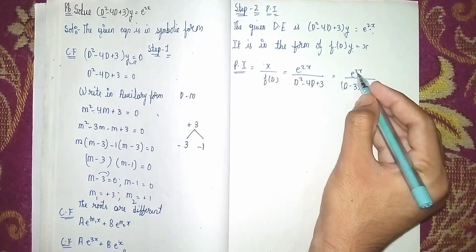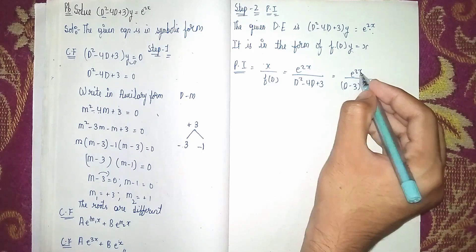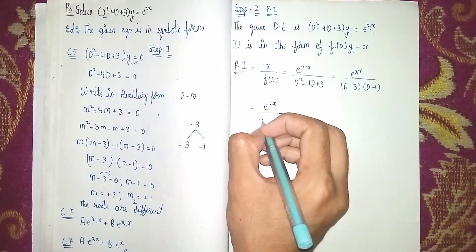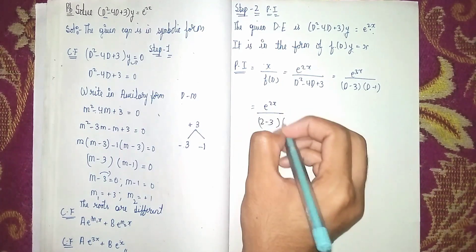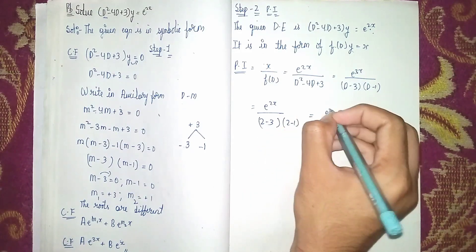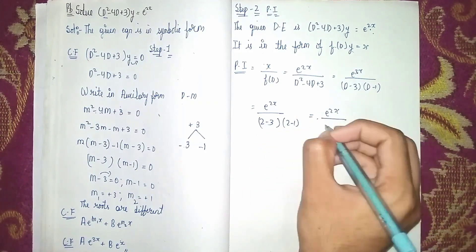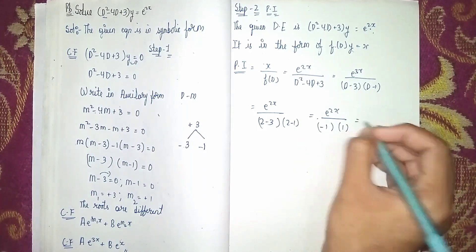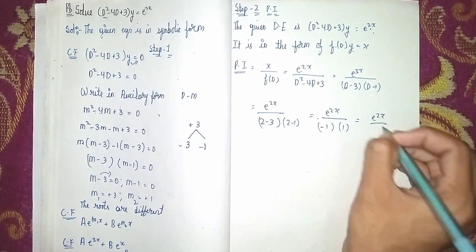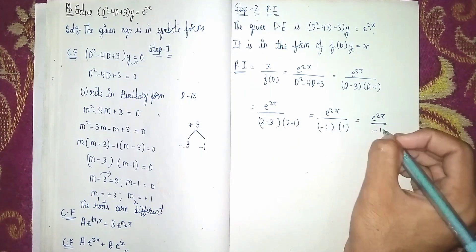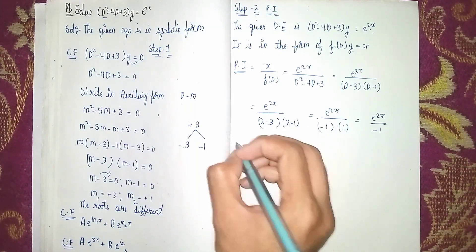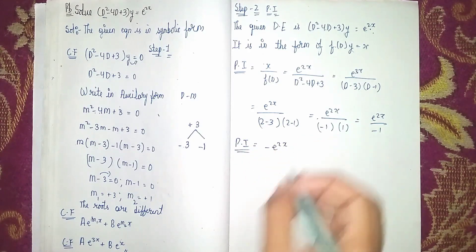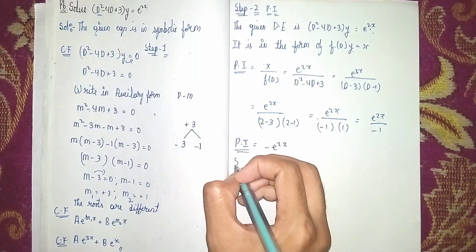Now substitute d = 2 into the denominator. We get e^(2x) / [(2 - 3)(2 - 1)] = e^(2x) / [(-1)(1)] = e^(2x) / (-1). Therefore, the particular integral is -e^(2x).